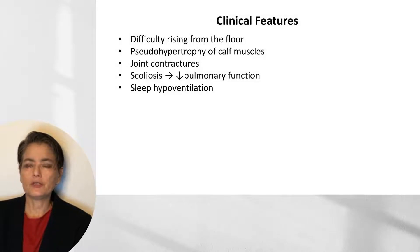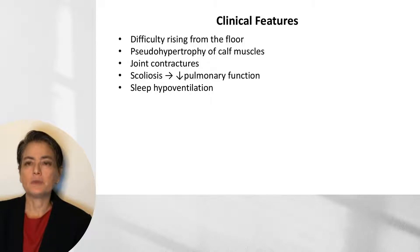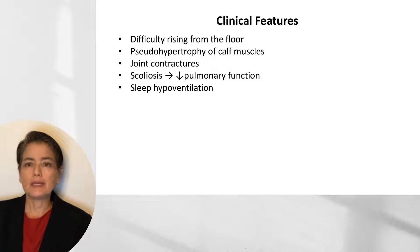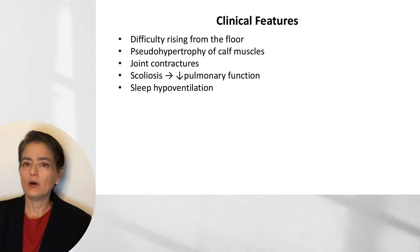Clinical features of Duchenne muscular dystrophy — and also seen in Becker muscular dystrophy — include initial difficulty rising from the floor, since the pelvic girdle muscles are used to rise. There is also pseudohypertrophy of the calf muscles, where atrophy of other muscles occurs but the calves show replacement of skeletal myocytes with fat and fibrosis. Due to unopposed action of some muscles, joint contractures develop, which can lead to scoliosis, decreased pulmonary function, and sleep hypoventilation.